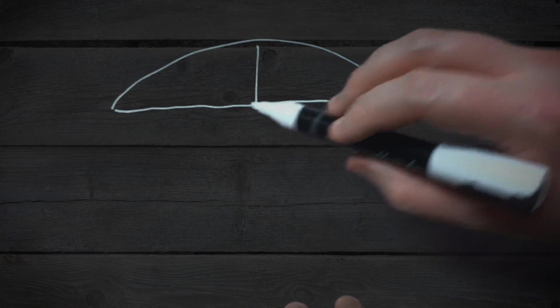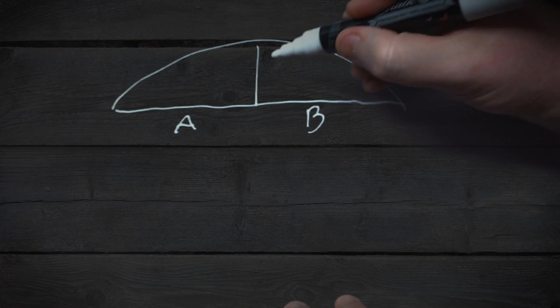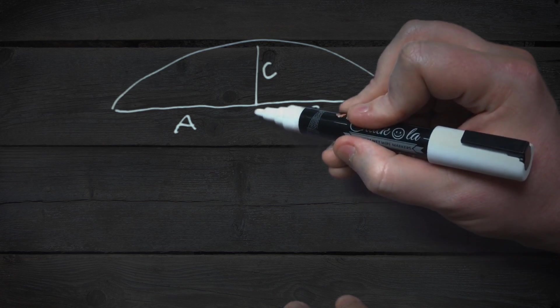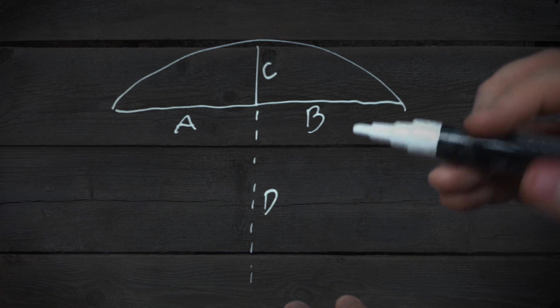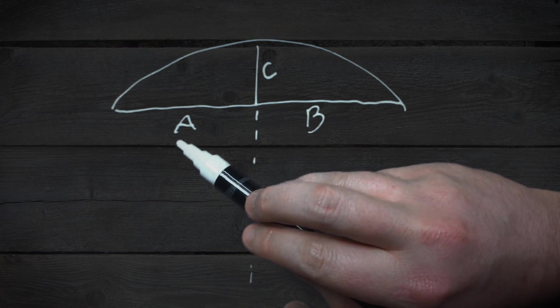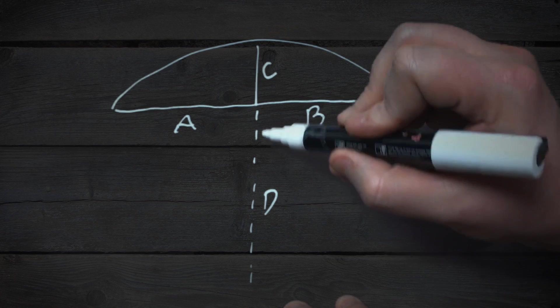Now if we treat this length as two segments, a part A and a part B, and we call the height here C, and we're trying to solve for what we'll call D, then all you really need to know is that A times B divided by C will equal D.